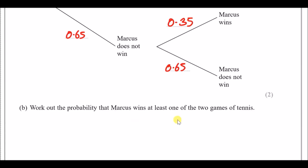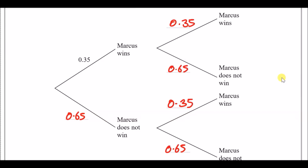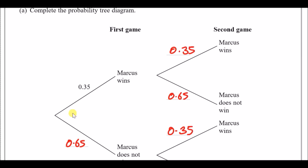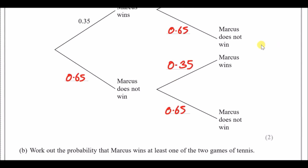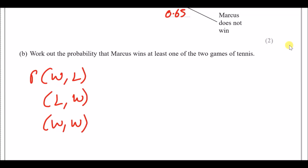Part b: work out the probability that Marcus wins at least one of the two games. If he wins at least one game, he could either win the first and lose the second, lose the first and win the second, or win both games. We write down all three probability options.